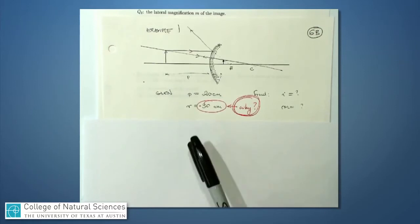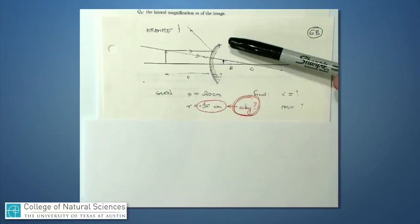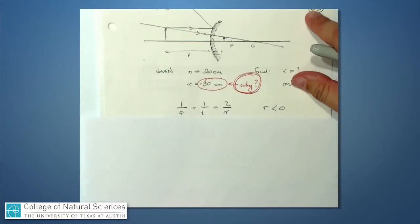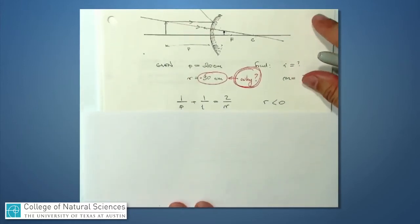However, the radius of curvature here, which I was given in the problem, is 30 centimeters. This is actually a negative 30 centimeters. Why? Because it's a convex, meaning bowed out mirror, the center of curvature is over on this side. And as a result, r is a negative number. And when we calculate focal length in just a moment, that's also a negative number.